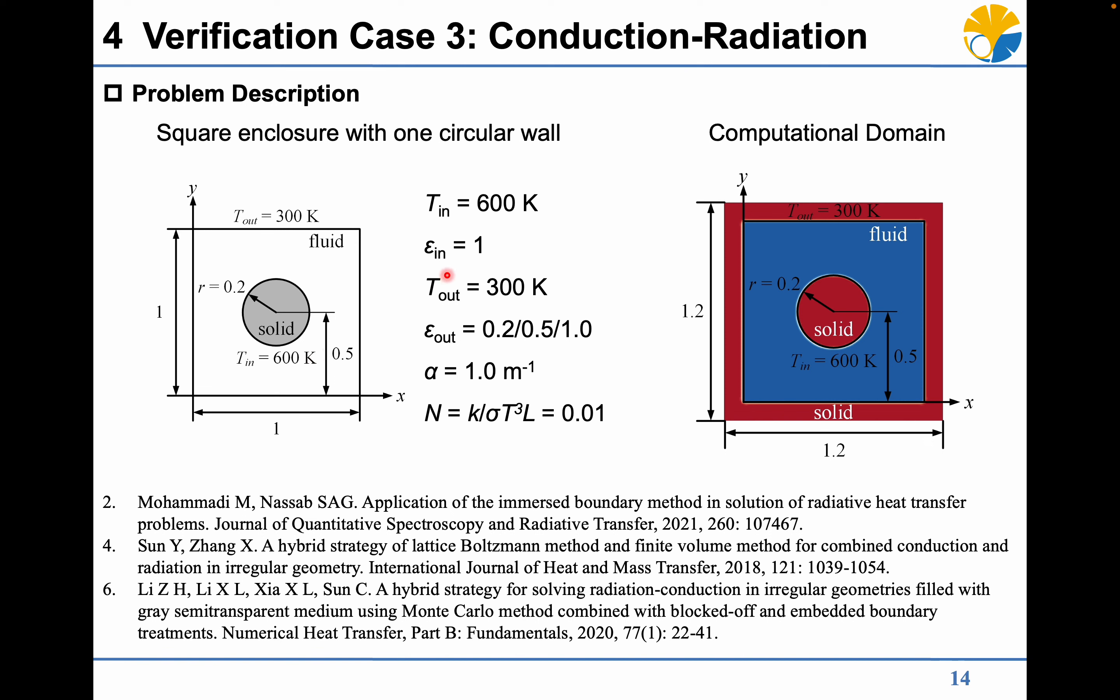The emissivity of the inner circular wall is 1, and the emissivity of the outer square wall is different under different test cases. The thermal conductivity is defined by a dimensionless number.